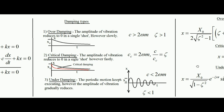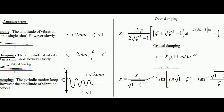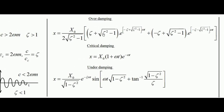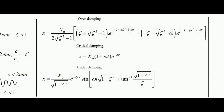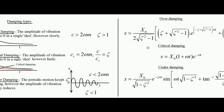For every curve there is a mathematical equation. For over damping, the relation is: x = (x₀ / 2√(ζ²−1)) · { (ζ + √(ζ²−1)) · e^[−(ζ − √(ζ²−1))ωt] + (−ζ + √(ζ²−1)) · e^[−(ζ + √(ζ²−1))ωt] }. This is the equation for the over damping case when c is greater than 2ωm.